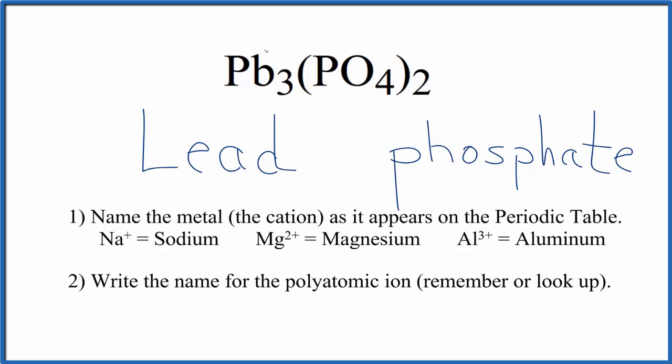Lead though is a transition metal, so we need to figure out the charge and add it to the name. The phosphate ion is 3-, and we have two of them. 2 times 3- is 6-, so we need 6+ to get a net charge of zero.